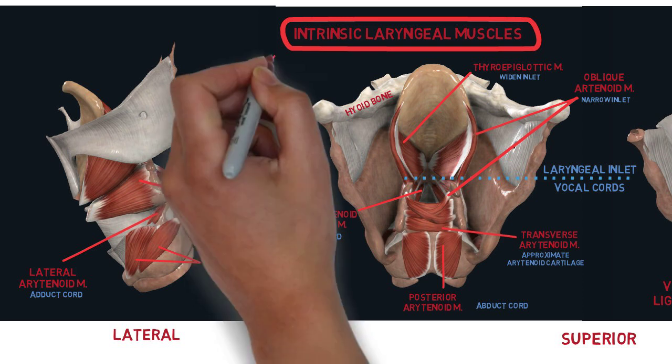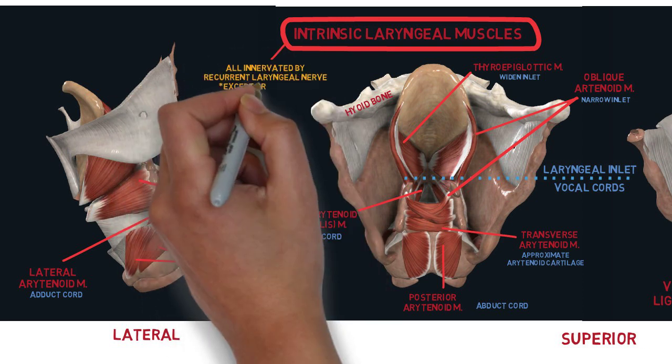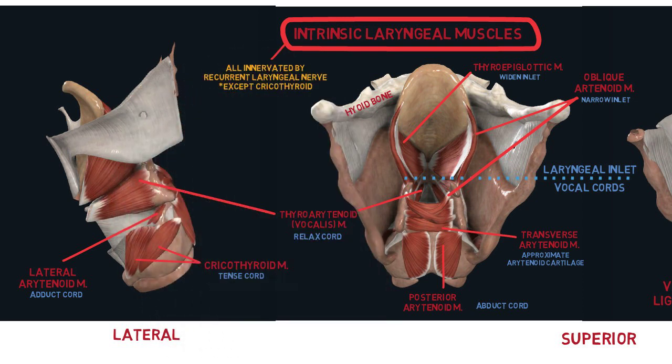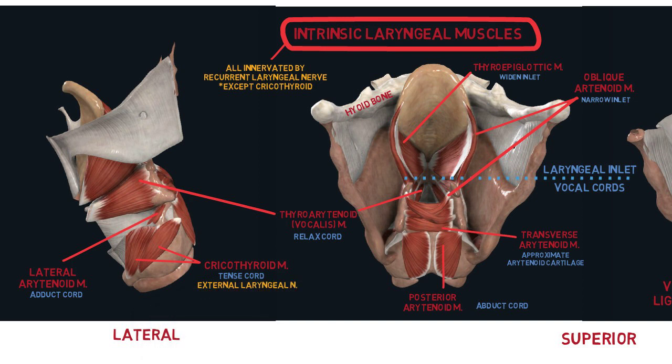All intrinsic laryngeal muscles are innervated by the recurrent laryngeal nerve, which is a branch of the vagus nerve, except the cricothyroid which is innervated by the external laryngeal nerve.